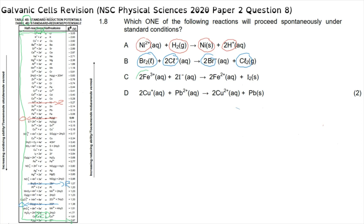Option C involves going from Fe³⁺ ions to Fe²⁺ ions. We find this reduction half reaction on the table of standard reduction potentials. The other half reaction — from iodine ions to iodine molecules — appears just slightly above it on the table, making it an oxidation half reaction. This creates a spontaneous reaction because iodine is easily oxidized, and moving down the table, iron is easily reduced. The correct answer is option C.